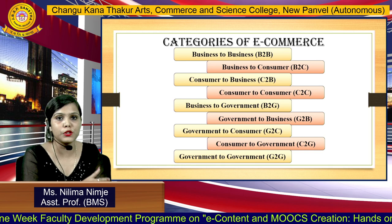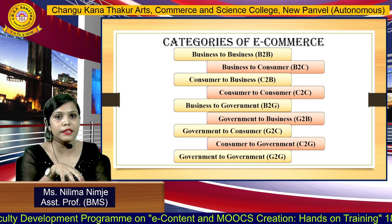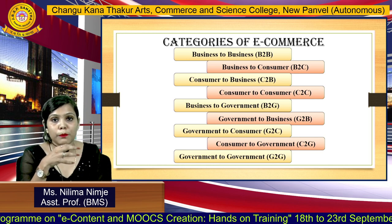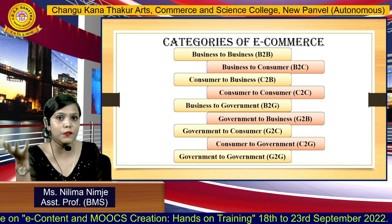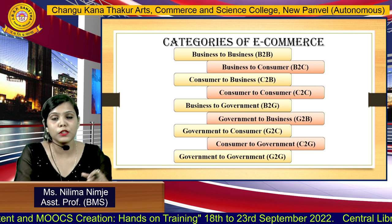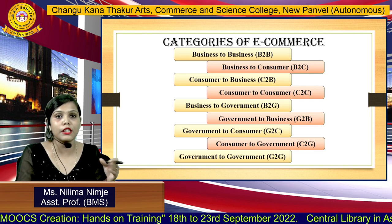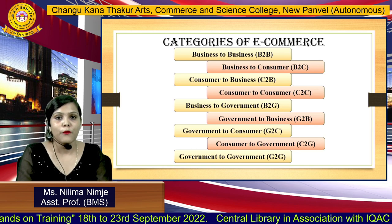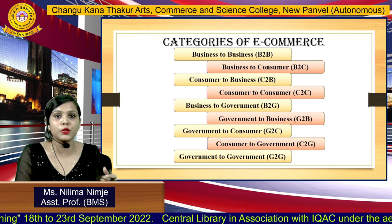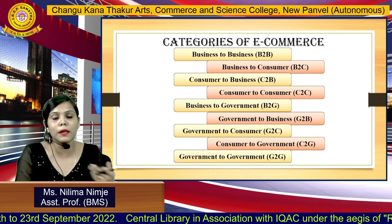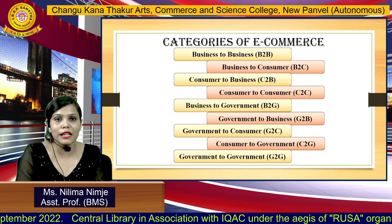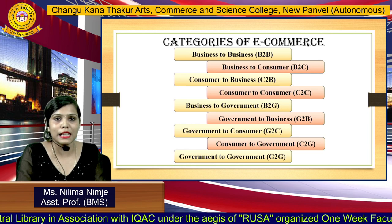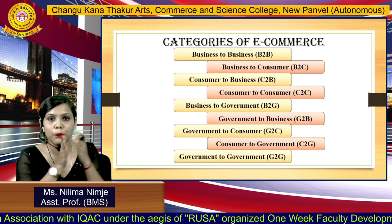Moving towards Consumer to Consumer, or C2C. Here consumers can individually transact among themselves in an online environment. The emergence of the C2C model came from the immense growth of e-commerce and online auctions, where every individual gets an opportunity to bid on what they want from among multiple customers. OLX is a classic example of the C2C model.